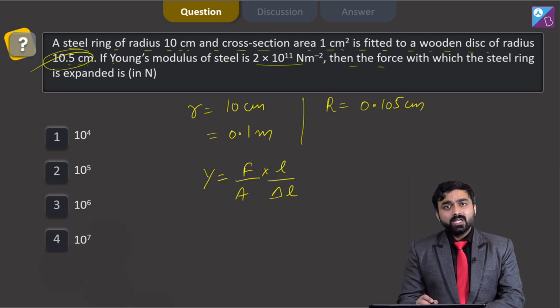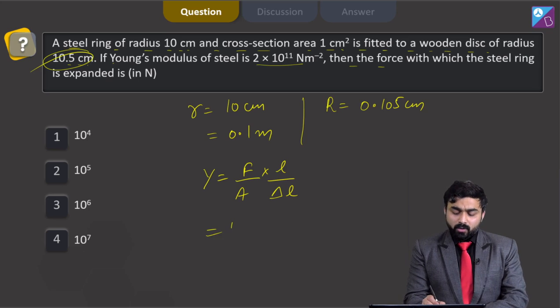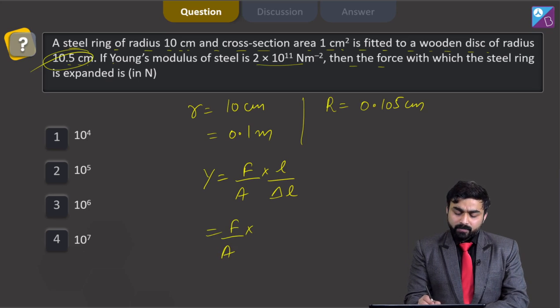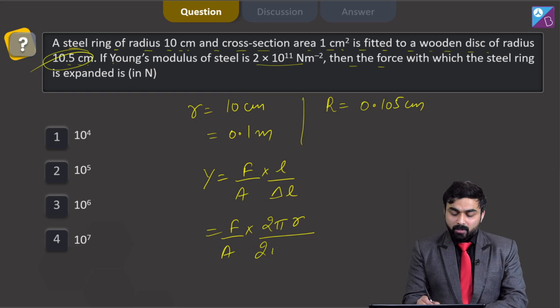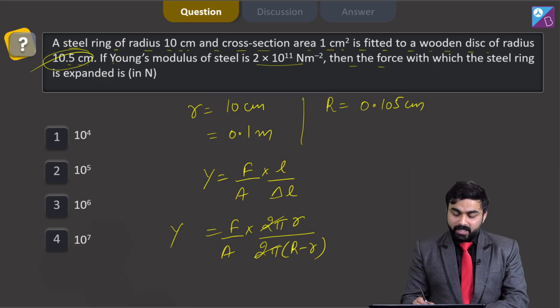Now, if we talk about original circumference of the ring, the original circumference of the ring was 2 pi R. And if we talk about the change in circumference of the ring that is delta L, it will come out to be 2 pi into R minus R. Now, this 2 pi will cancel out.